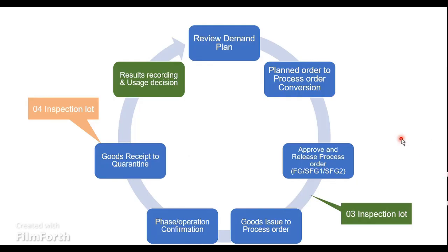Here in this slide you can see the overall process of how the manufacturing process takes place, right from the demand creation until the completion of the quality inspection. In the previous video we discussed about the 04 inspection lot, which gets created basically upon the goods receipt of the production order or the process order. So once manufacturing has been completed and goods have been moved from the shop floor into quality inspection, that's where we will have the 04 lot created.